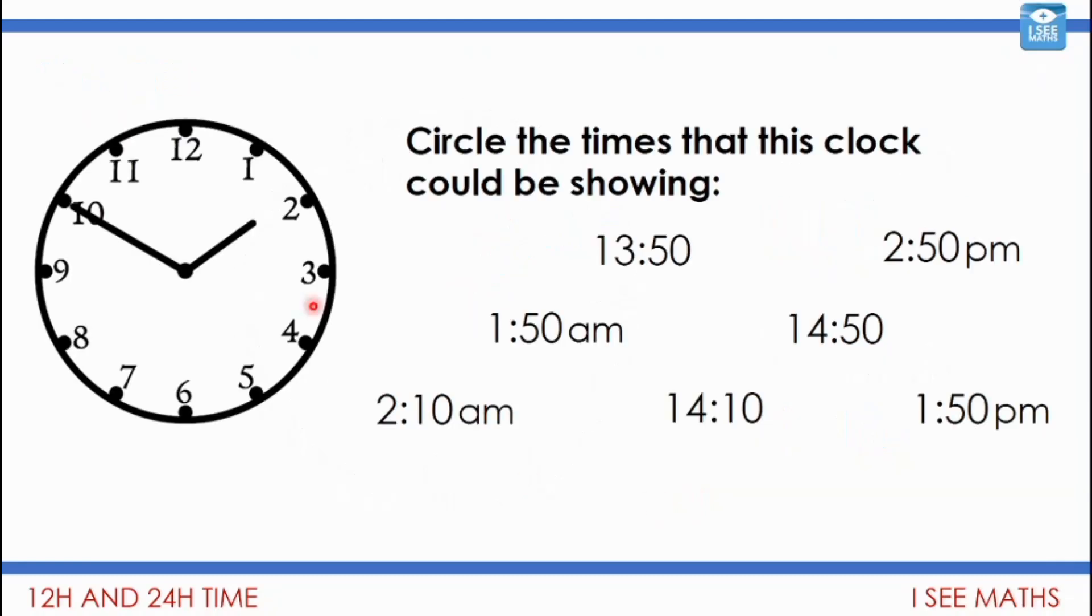Then when we get to 1:10 a.m., it is then 1:10 in 24-hour time as well. Now have a look at this clock here, and let's see if we can combine all the things that we've learned. What time could this clock be showing of all these times here? It's more than one, it's a few of them. Have a look which ones you can rule out and which ones could it be. I wonder how many you can find. I've not put all of them here, but I've put some of them. Pause the video.